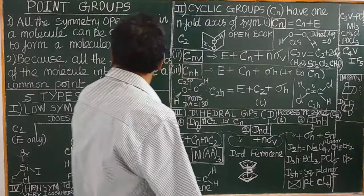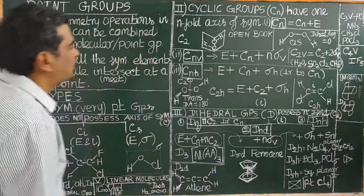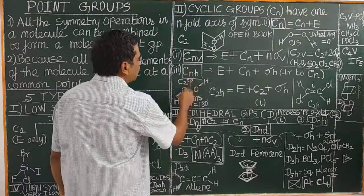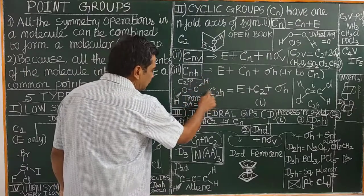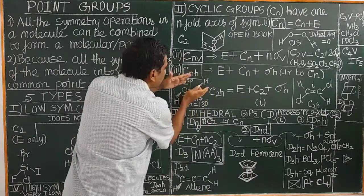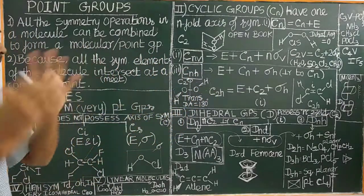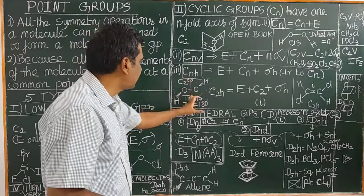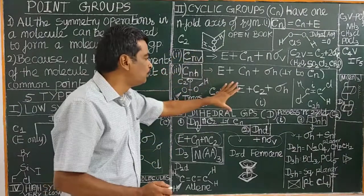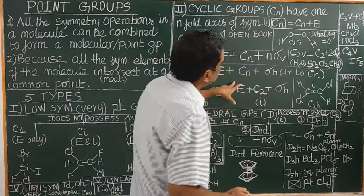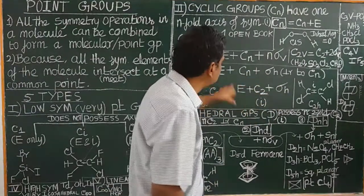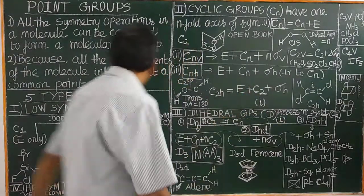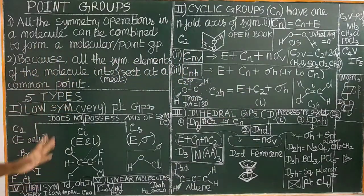Because all the symmetry elements of the molecule intersect at a common point, the collection of symmetry elements or symmetry operations of a molecule is called a molecular point group. There are five types of point groups that we have been talking about.